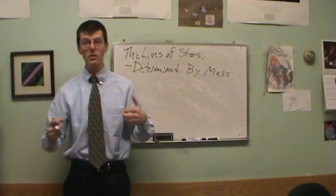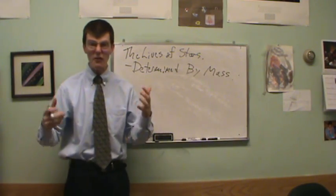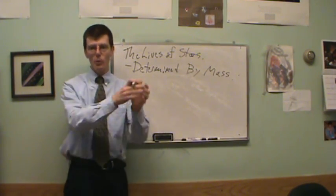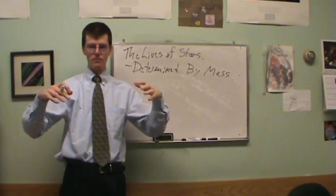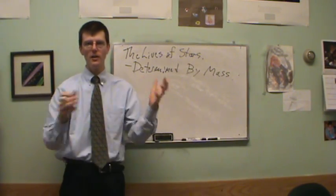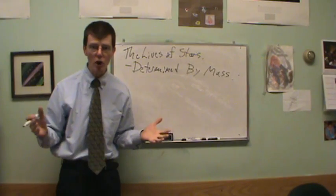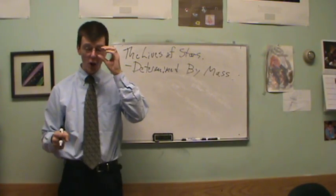The main thing that determines what's going to happen to a star during its life is what its mass is. And so when a star forms, you don't make one star, you make hundreds, thousands, millions of stars at once. And so what you find out is that it's all about the mass.